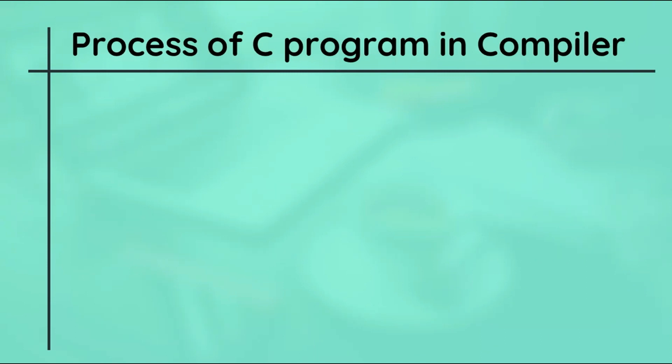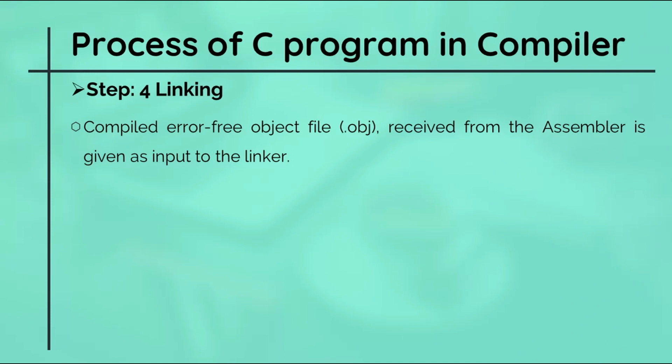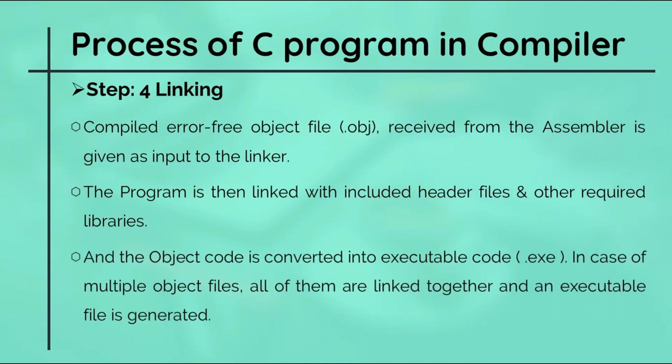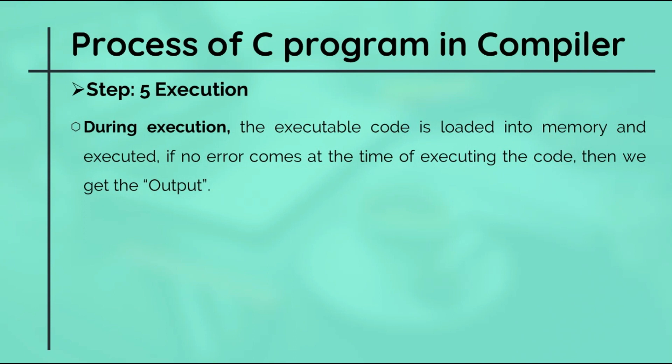Step four is linking. The compiled error-free object file that is received from the assembler is given as input to the linker. The program is then linked with the included header files and other required libraries, and the object code is converted into the executable code, that is dot EXE. In case of multiple object files, all of them are linked together and an executable file is generated. At last, execution.